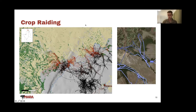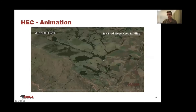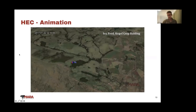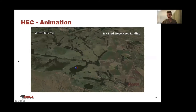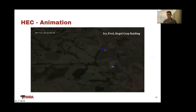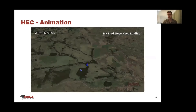Here we can see what crop raiding looks like animated. Ivy, Fred, and Kegel teamed up one year and cooperated together over about a week. You can see how they use forest staging sites, going to agricultural fields at nighttime — sometimes very coordinated together, other times going their separate ways. The tracking data is giving us a lot of insight into what the behavioral strategies are. That animation was also done using ArcGIS Pro.